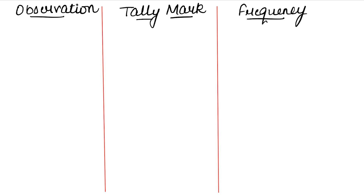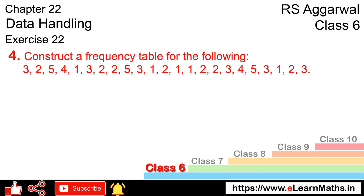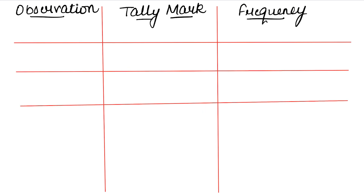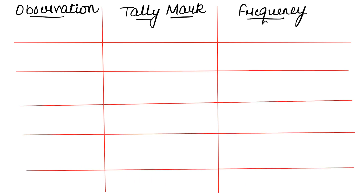Since we only need to find frequency, we look at the data. The least number is 1 and the maximum number is 5, so we put observations 1, 2, 3, 4, and 5 in the observation column.